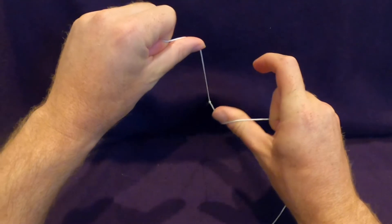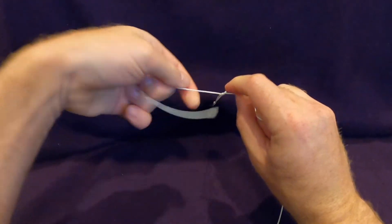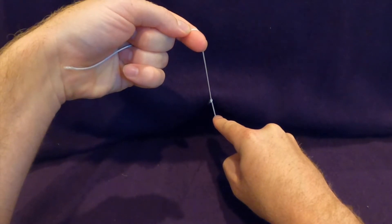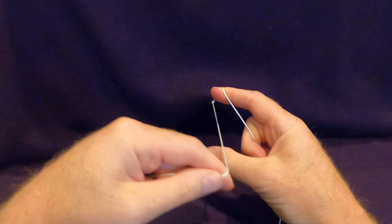The second half of the knot begins by once again making a C with the thumb and index finger and draping the suture behind the thumb. The suture tail passes between the thumb and index finger, they rotate, pinch closed, pass the tail through and then cinch the knot down.